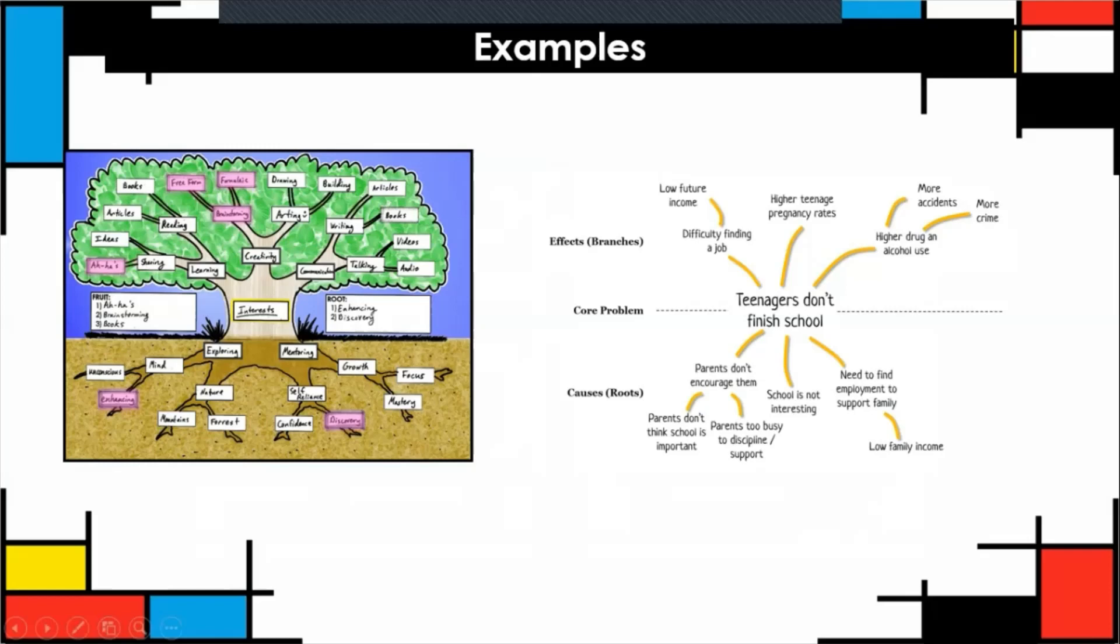The core problem always goes in the middle or in the trunk. Teenagers don't finish school. So what is a cause? One of the causes that they don't finish school is parents don't encourage them. That's a primary cause. And then this cause has secondary causes: parents don't think school is important, and parents are too busy to discipline or support their children. So then this cause has a direct effect. What's a direct effect? In the future they're gonna have difficulty finding a job. Now what's the secondary effect? Their income is gonna be low. They're gonna have a low salary as professionals or workers.